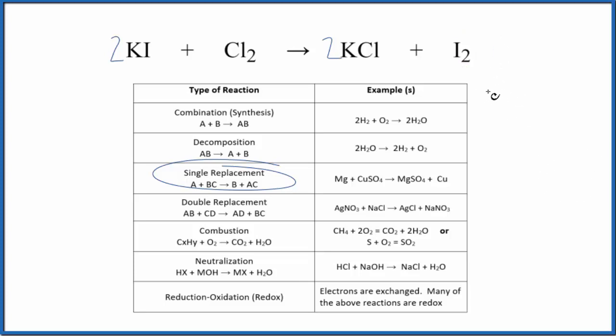If I look at the oxidation states for each element, I can see the iodine starts out with a negative one oxidation state and goes to zero since I2 is a free element. So we went from negative one to zero. We've lost an electron. We've been oxidized.